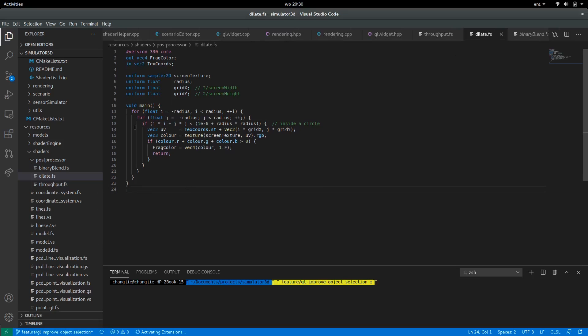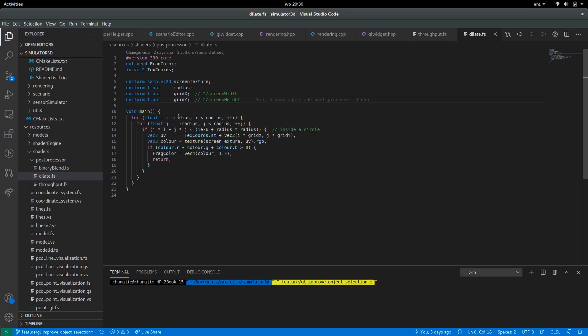So this is the shader of dilation operation. It's pretty simple. So you set the radius of the kernel. Then you loop each pixel and you check if the color is not black. If it's not black, then you fill the pixel with that value.